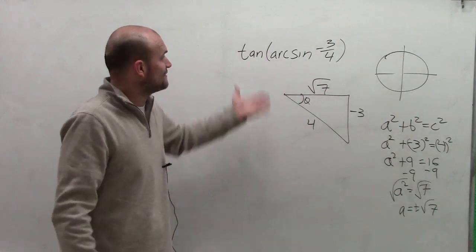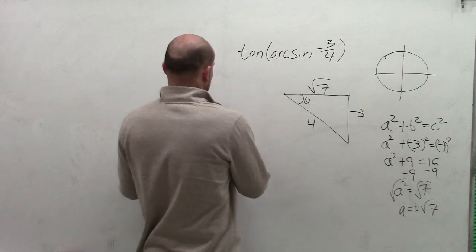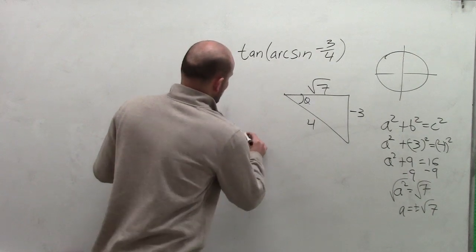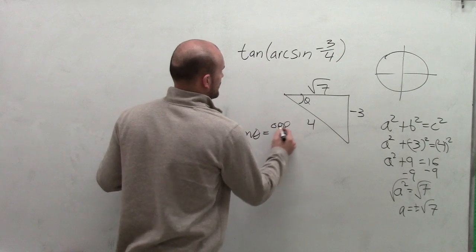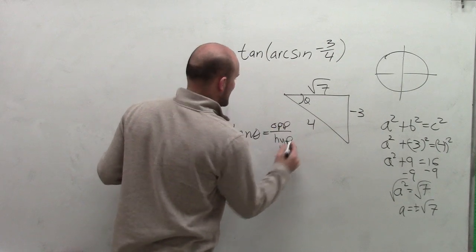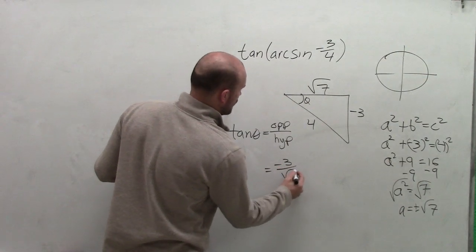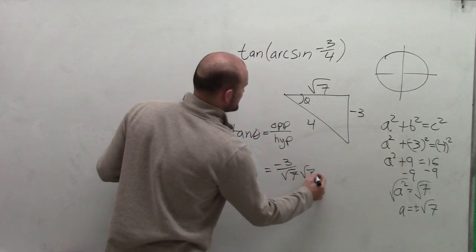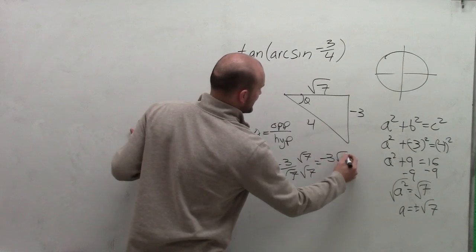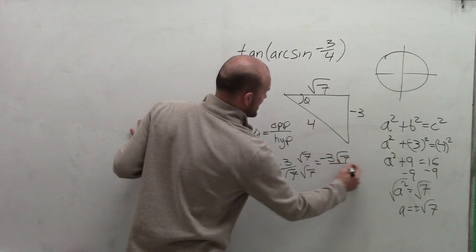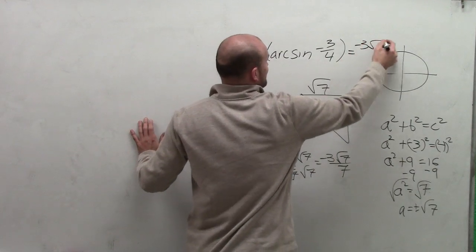Now I need to evaluate the tangent of this triangle. The tangent of an angle in a right triangle is opposite over adjacent. In this problem, that gives me negative 3 over the square root of 7. By rationalizing the denominator, I obtain negative 3 square root of 7 divided by 7. And that's going to be my final answer.